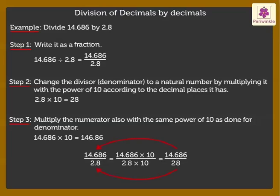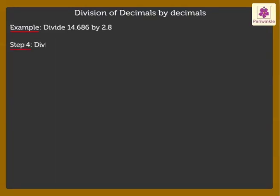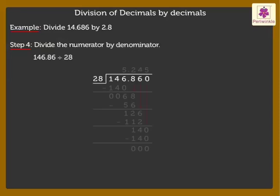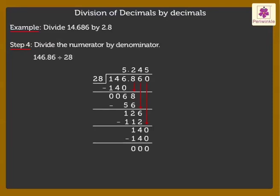We can get back the same fraction by dividing it by that same number. Step 4: Divide the numerator by the denominator — that is, divide 146.86 by 28. We get the quotient as 5.245. Thus, 14.686 ÷ 2.8 = 5.245.